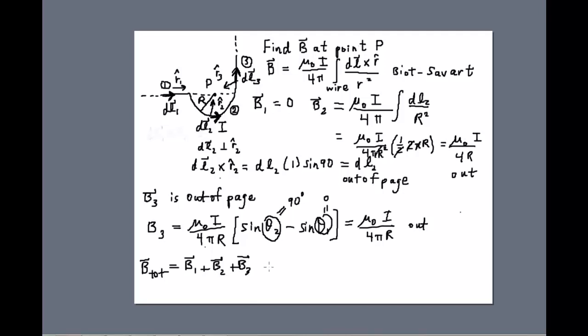B total by the superposition principle is the sum of B1, B2, and B3. And remember, we're only calculating the field at point P. If we wanted to know it somewhere else, we would have to do different calculations. We found that B1 is 0, B2 and B3 contribute using the expressions here. And you can see that there is a common factor.